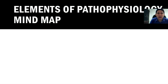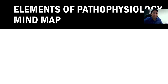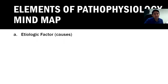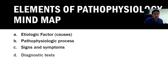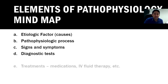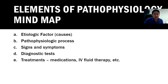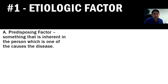The elements you need to include in your pathophysiology map are: number one, the etiologic factor or causes; number two, the pathophysiologic process involved; number three, signs and symptoms; number four, diagnostic tests; number five, treatments like medications, IV fluid therapy, and others; and finally, nursing diagnosis and complications.